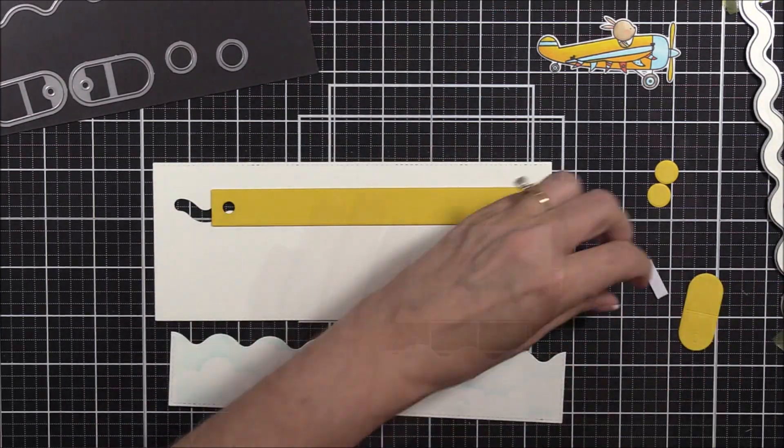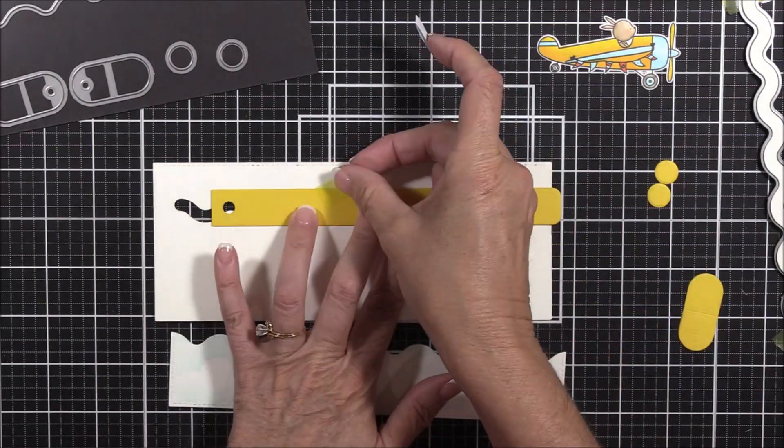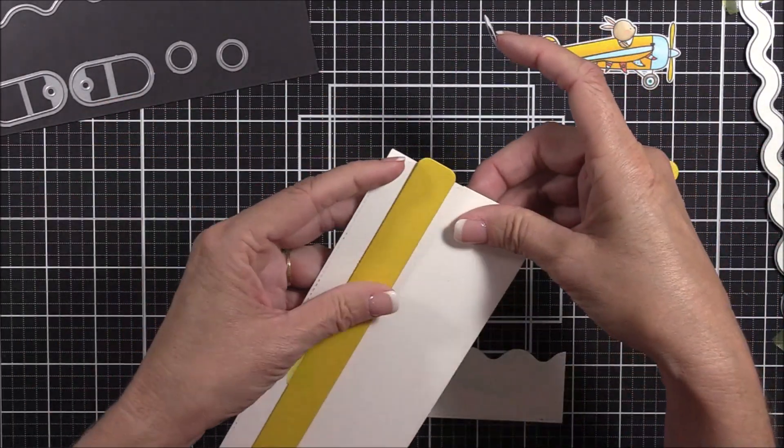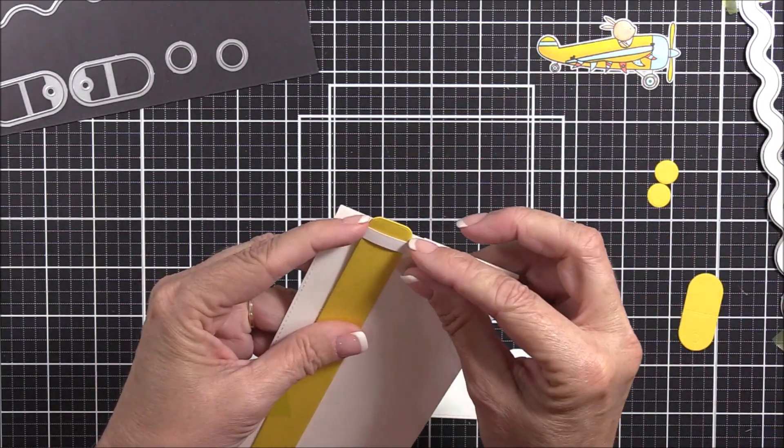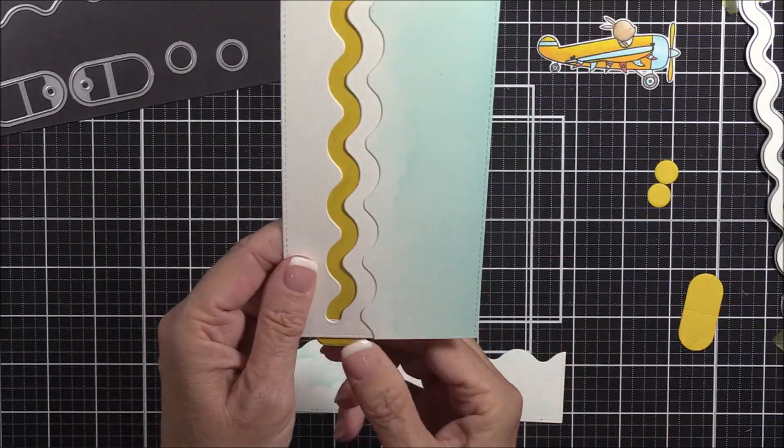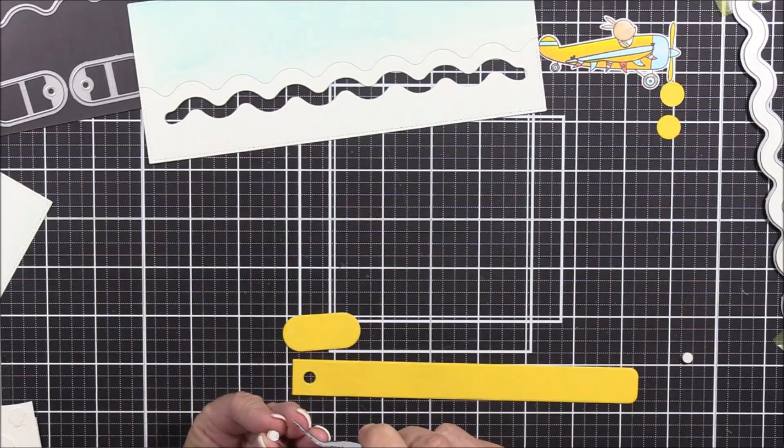I secured the pull tab in place with a piece of temporary tape before I adhered the pull tab collar to the back of the panel. This is the best way I've found to keep the pull tab aligned when being pulled, and it's so easy to do.